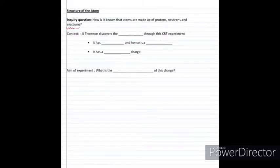Now for a little bit of context regarding the experiment, this comes just after JJ Thomson discovers the electron using his CRT experiment. And the conclusions he came up with were that it has mass, and hence it must be a particle, and this particle has a negative charge. So what Thomson has done is qualitatively describe the electron. However, quantitatively, he hasn't yet described the magnitude of the charge of the electron.